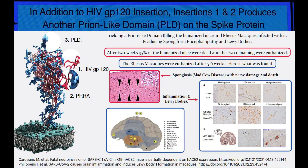The prion-like domain is at the very top, resulting from the box deformity. Two animal studies: first, humanized mice — you can see that square enlargement of the brain and it looks like a sponge. 95% of those animals died within two weeks, equivalent to about a year and a half for us. In rhesus macaques, sacrificed at five to six weeks, they found Lewy bodies in critical brain regions — that's Alzheimer's disease, produced in animal models closest to humans.